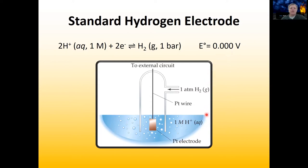The way this works is this is just protons dissolved in water at a concentration of one molar. These will interact with hydrogen gas that's bubbled into this electrode, and this gas is kept at a pressure of one bar. If the protons in the solution get reduced by picking up electrons from this wire sticking in here, then they will form hydrogen gas which will come back out.